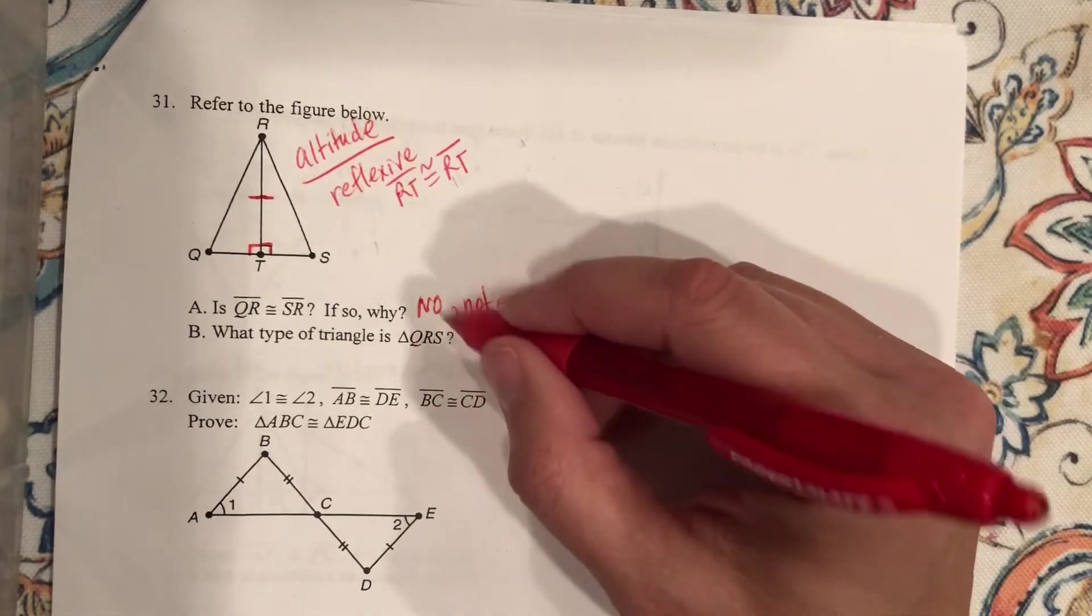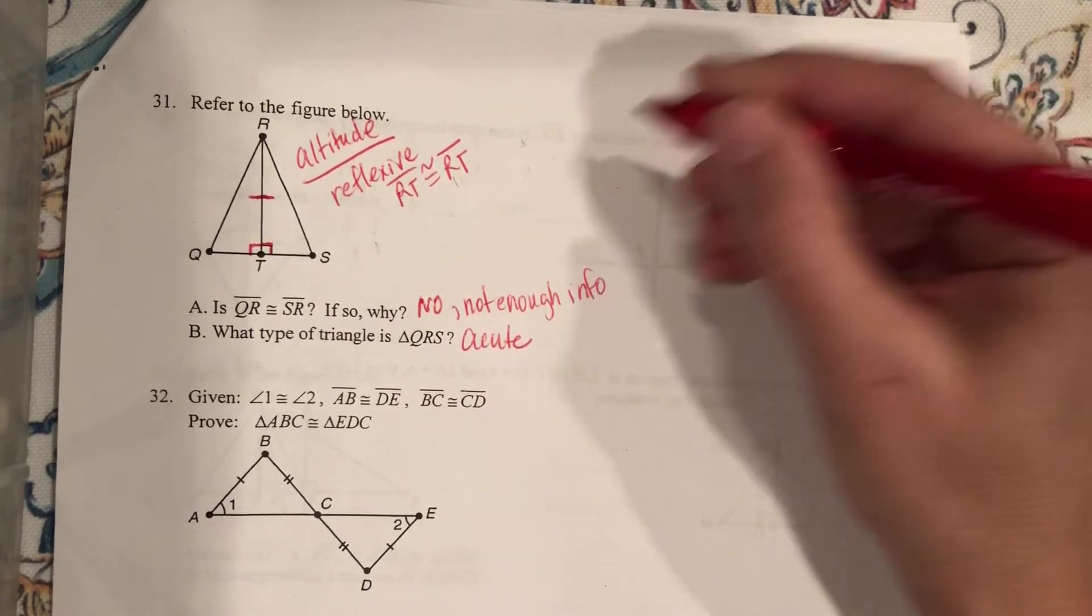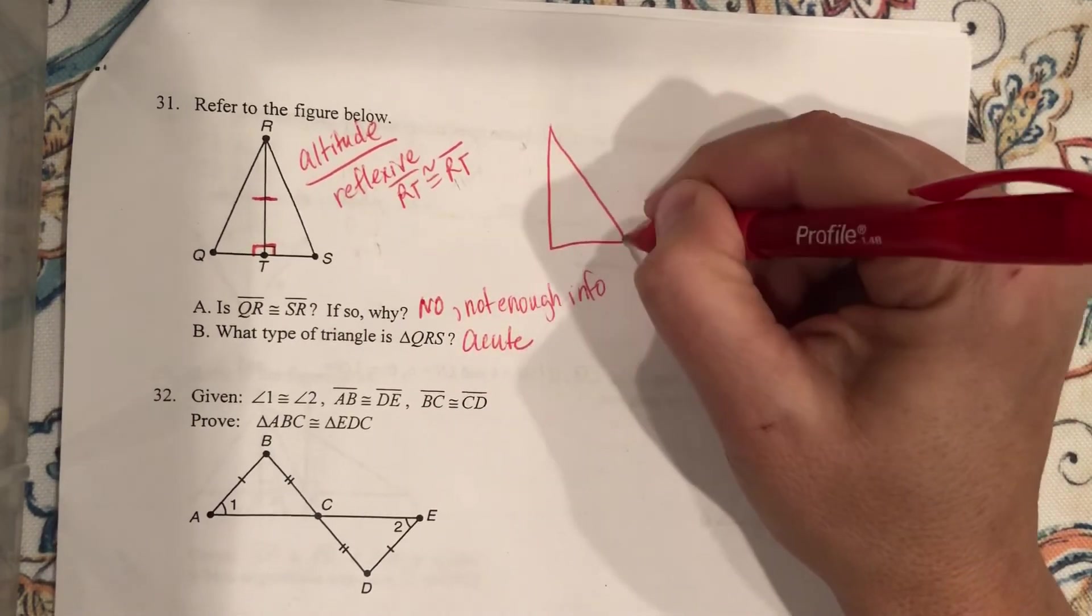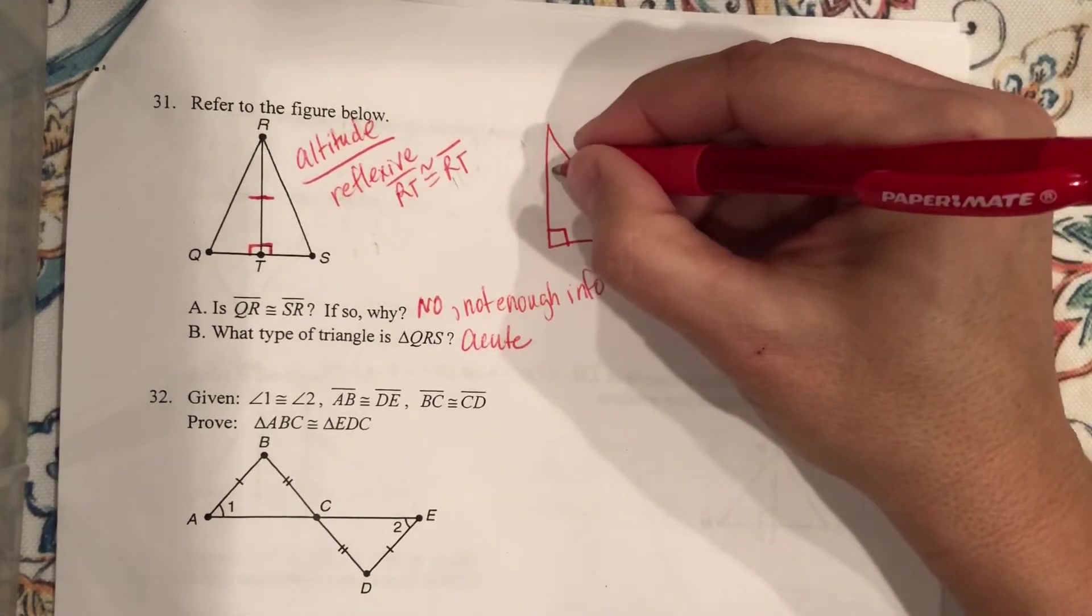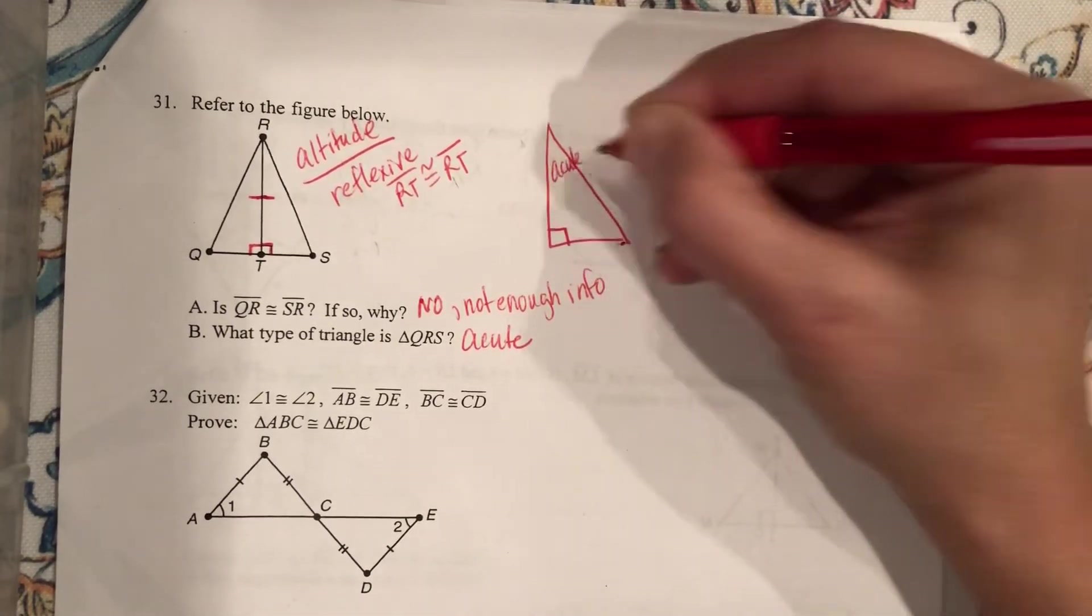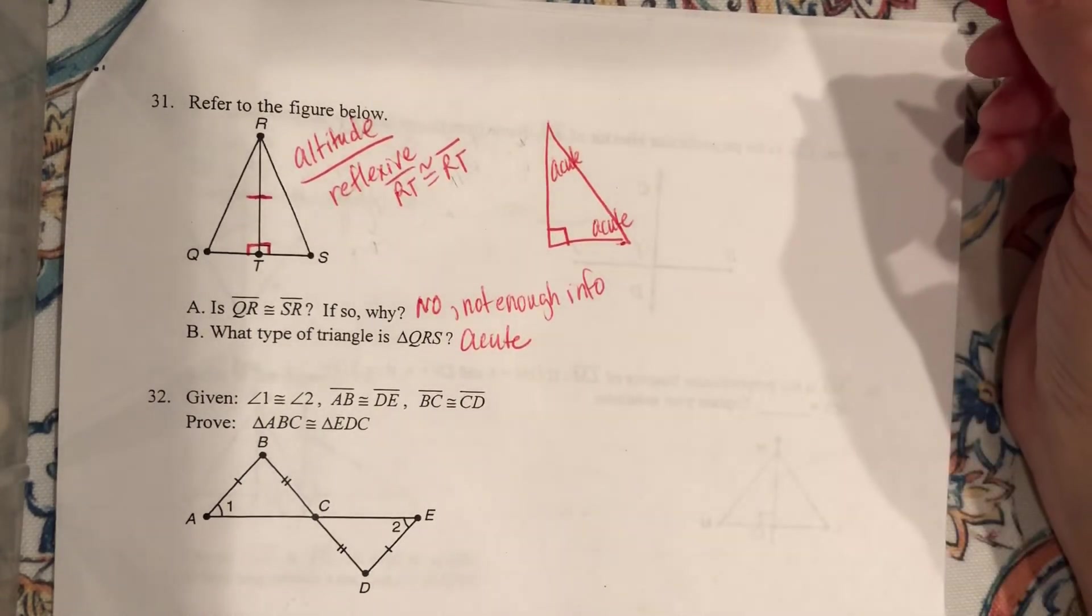So what type of triangle is QRS? It is an acute triangle, and here's why. What do you know about right triangles? Since that angle is 90, in a right triangle, the other two angles are always acute, right?